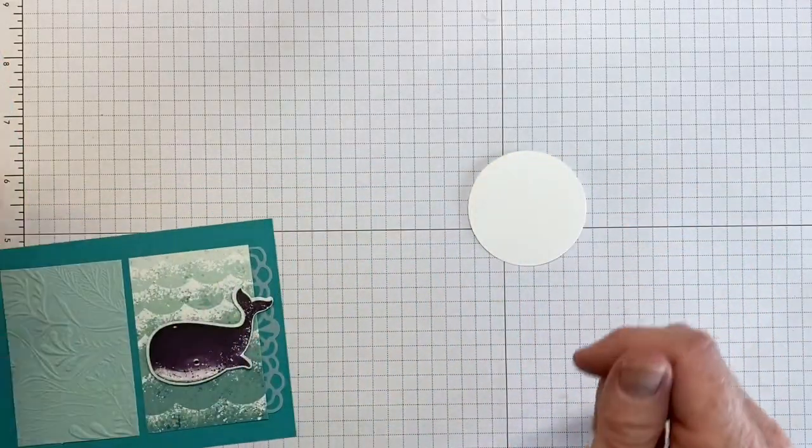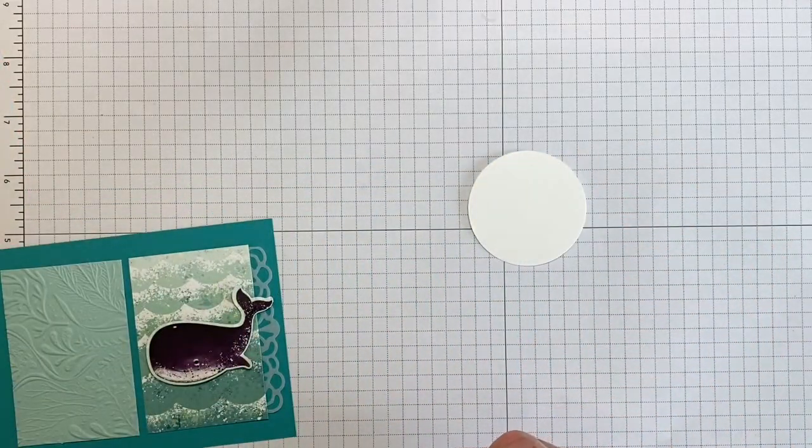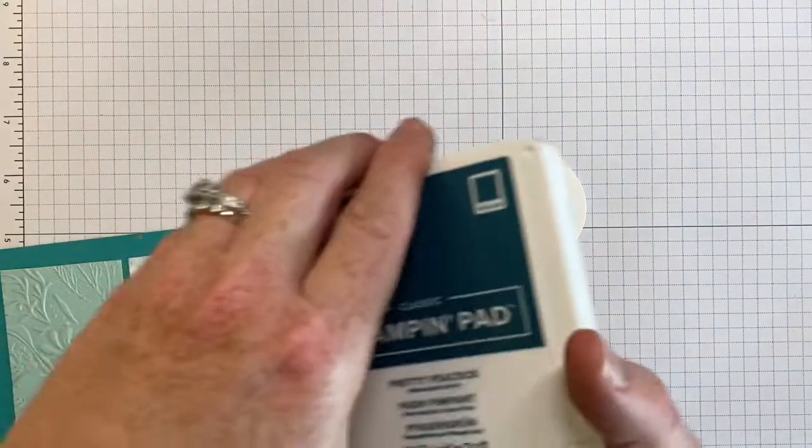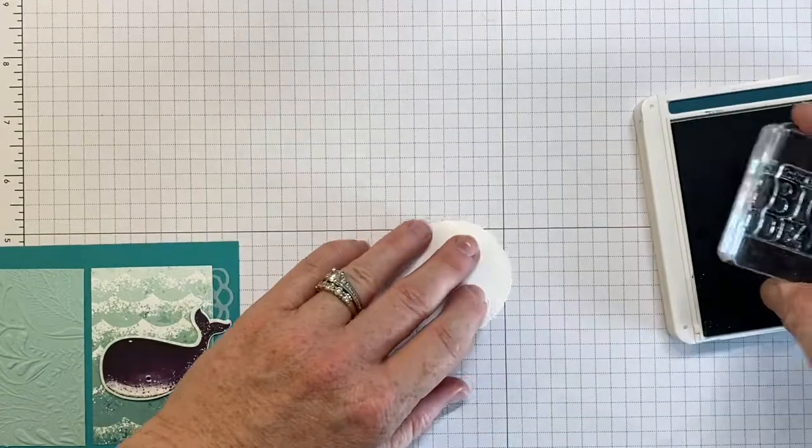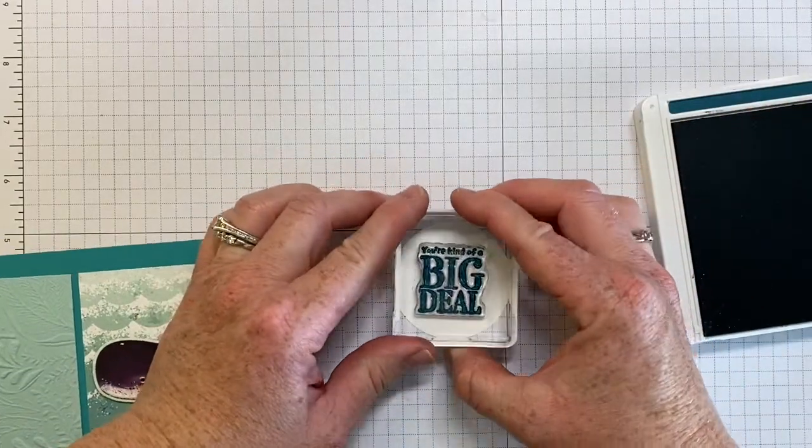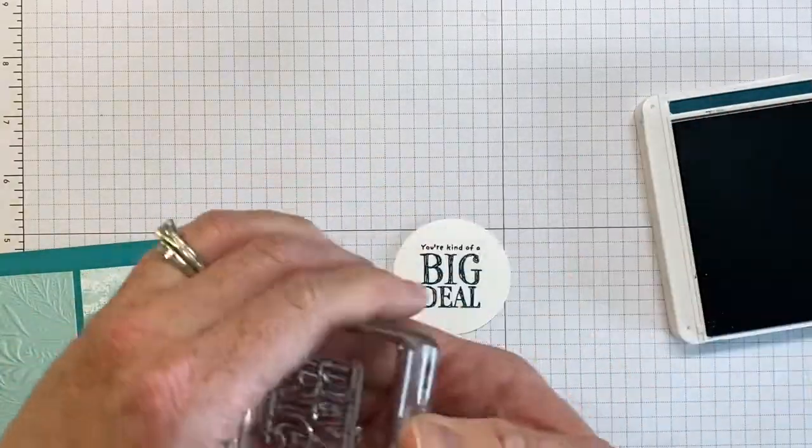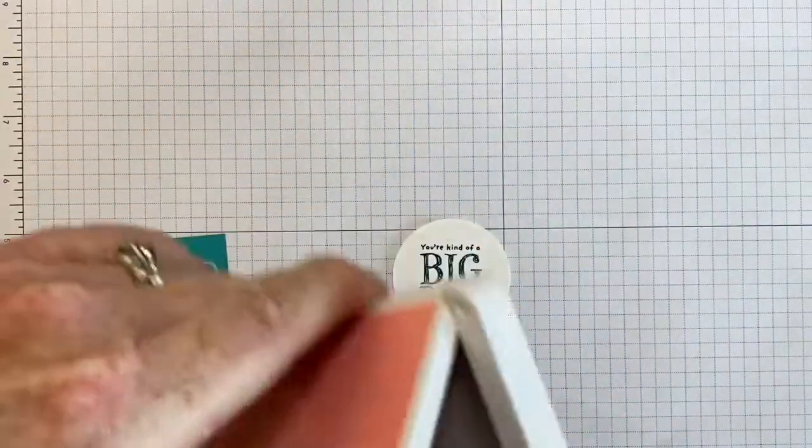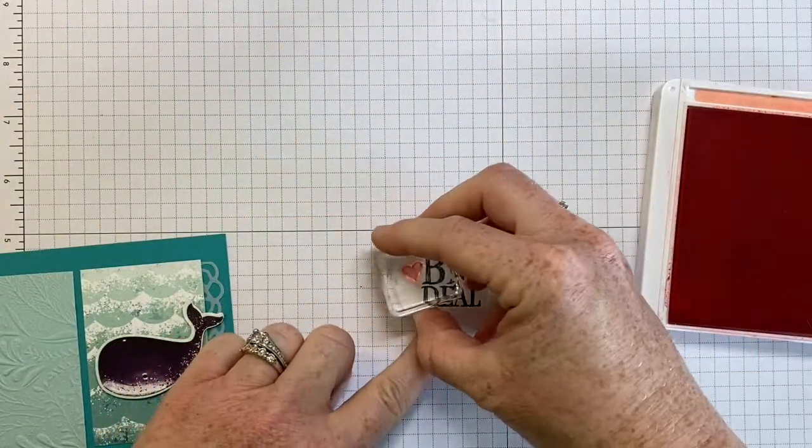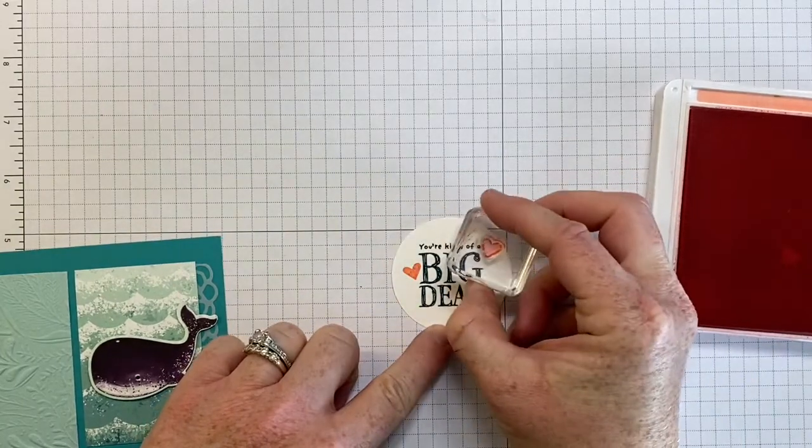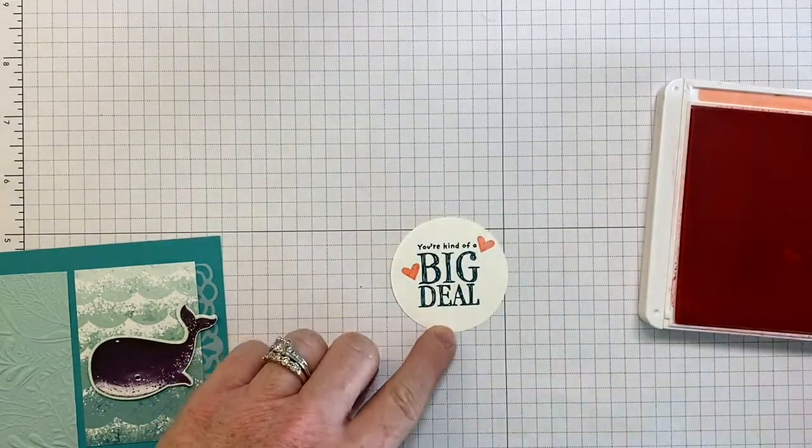I have a piece of Whisper White punched out at two inches and we're going to bring in Pretty Peacock. We're going to stamp the greeting, you're kind of a big deal. And then you're going to bring in Flirty Flamingo and use the cute little heart punch and just add some hearts around it like that.